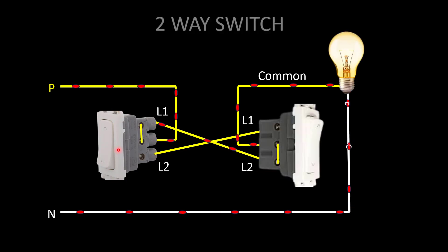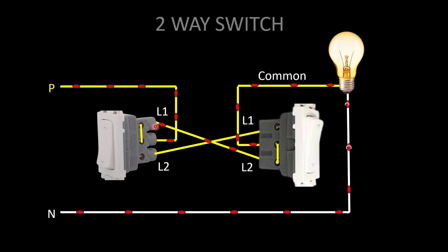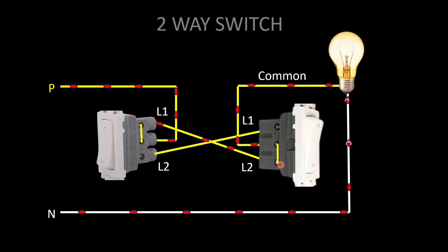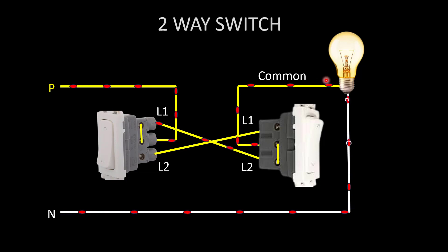In the second scenario, switch one is off and switch two is on — the light will be on. Current comes to the common terminal, then through L1 of switch one it goes to L2 of switch two. Since switch two is on, common and L2 are in connection, so from L2 the current flows to the common and on to the light. The circuit is completed and the light is on.